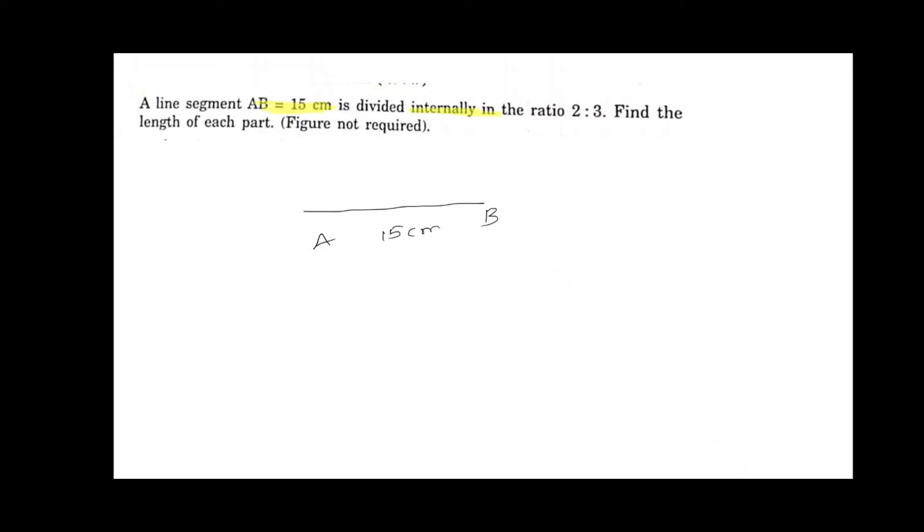This is a figure of AB, 15 centimeters. Actually figure is not required. It is given that this line segment is divided into 2 is to 3 ratio. The first part is 2 parts and the next part is 3 parts, meaning total 5 parts. So 5 parts equals 15 centimeters. 1 part equals 15 by 5, which is 3 centimeters.